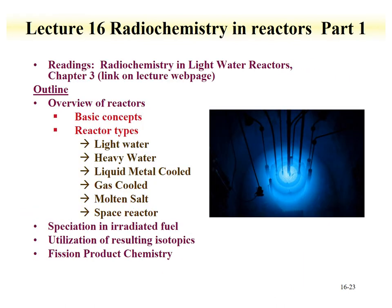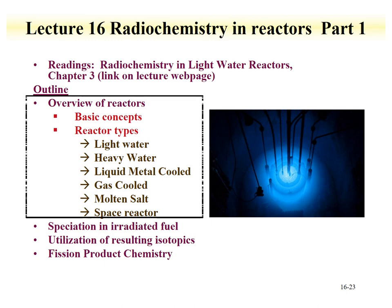That completes Part 1, where we discussed the types of reactors and concepts of reactors, as part of the lecture on radiochemistry in reactors. When you've completed this part, please go on to Part 2, where we'll talk about speciation in irradiated fuel, utilization of the resulting isotopes, and an overview of fission product chemistry in reactor systems.